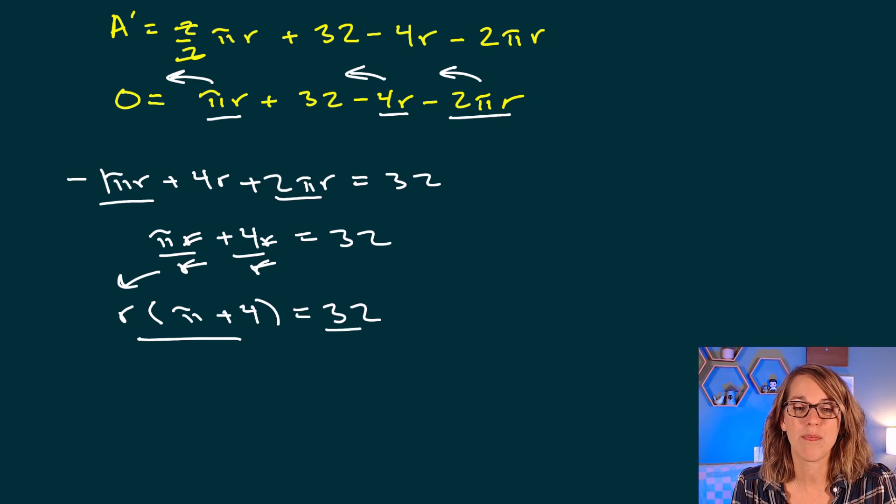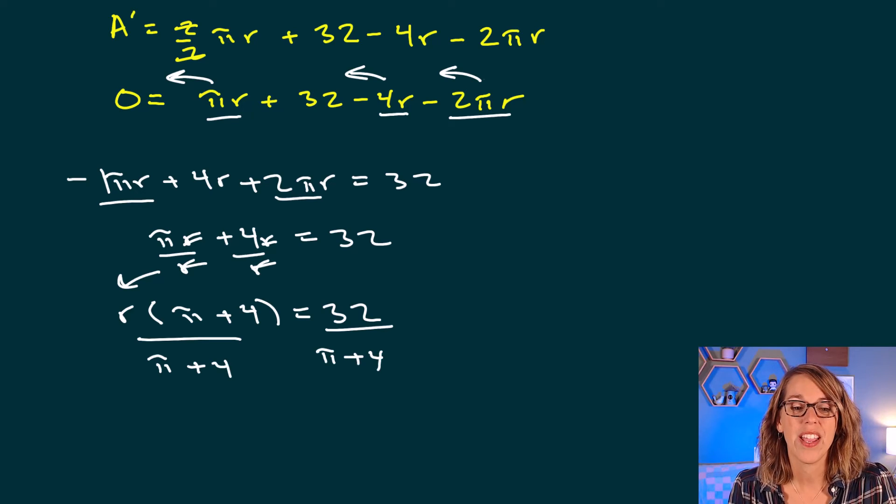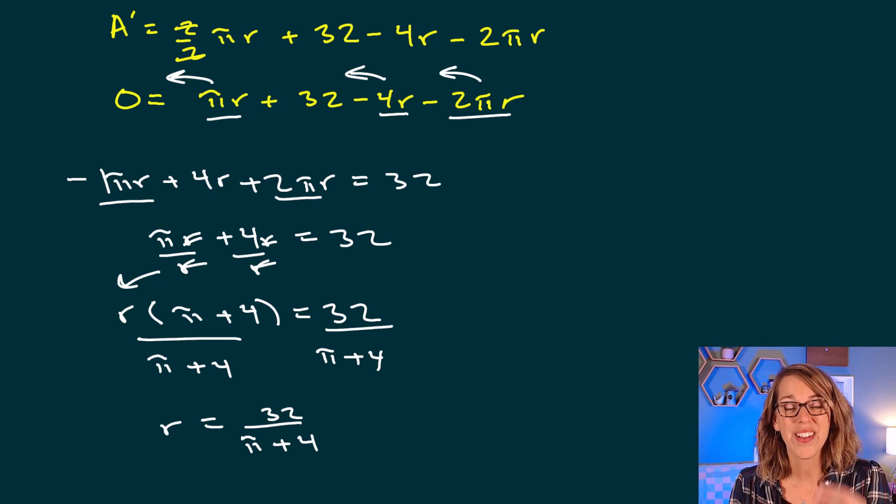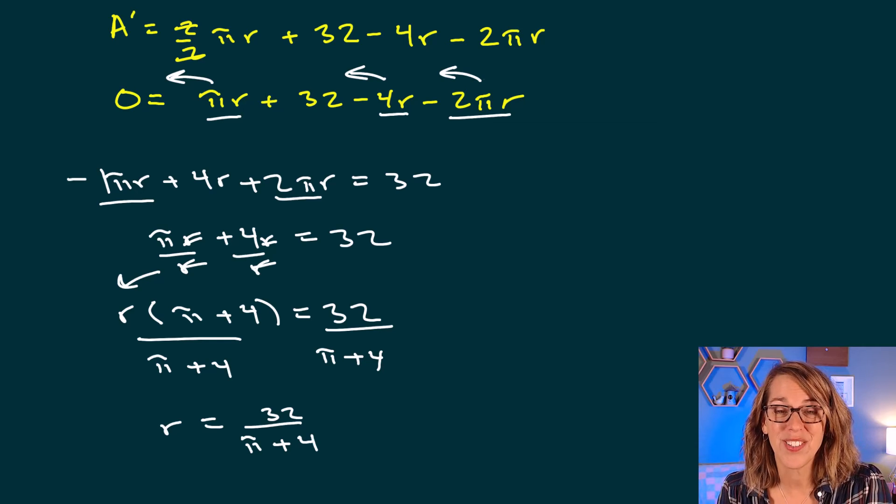All I've got left to do is to divide both sides by that pi plus 4, pi plus 4, and we have our value for r. I'm going to leave it as an exact value. You could certainly put this into your calculator right now, but I've got more work to do.